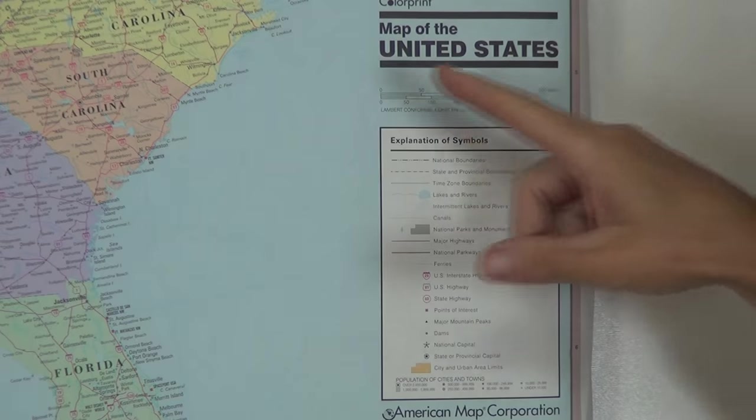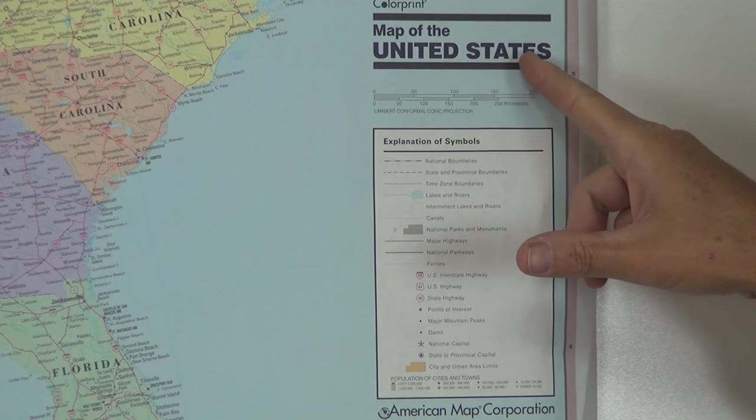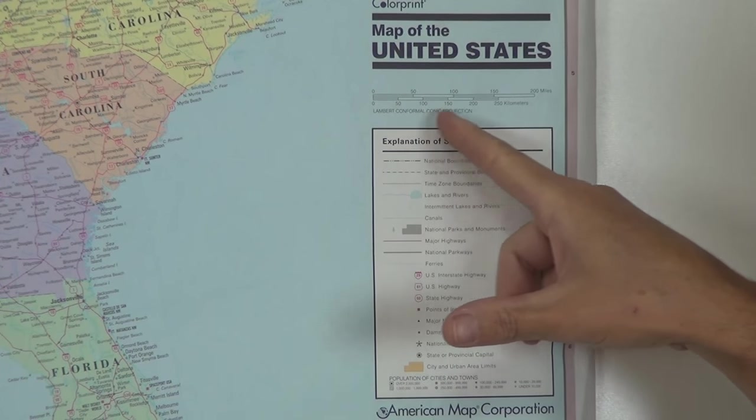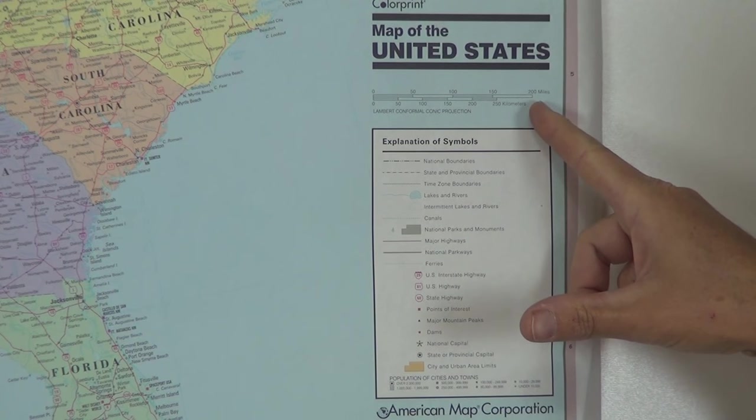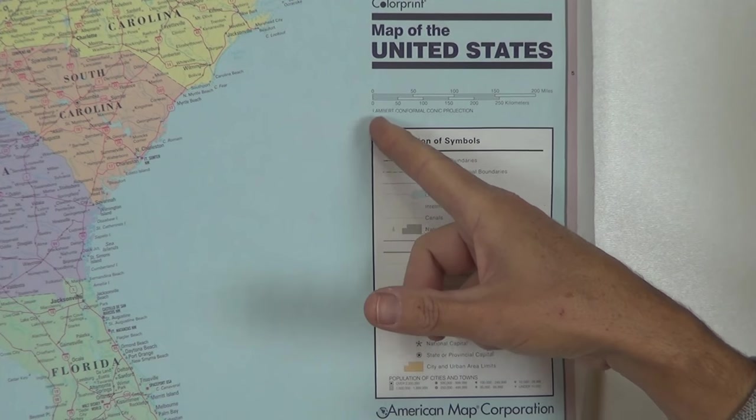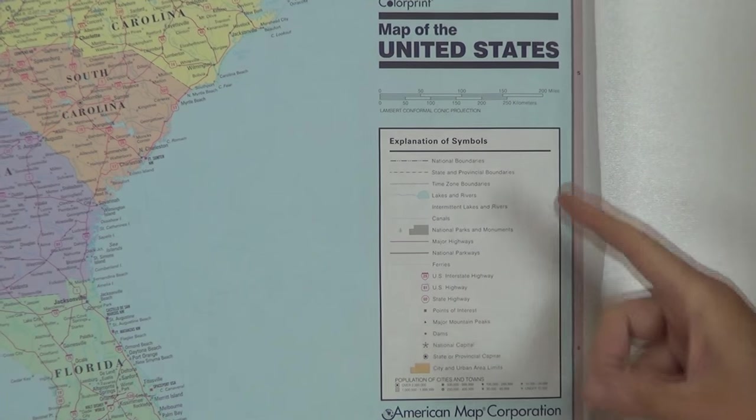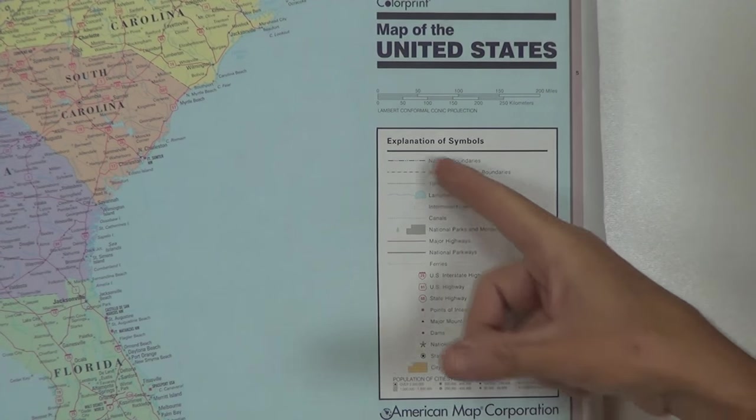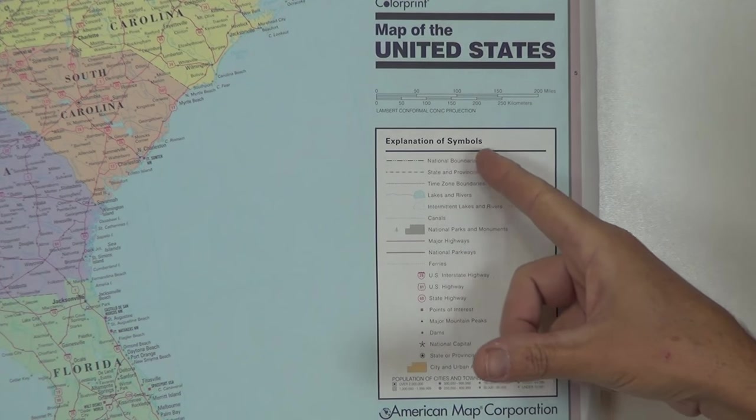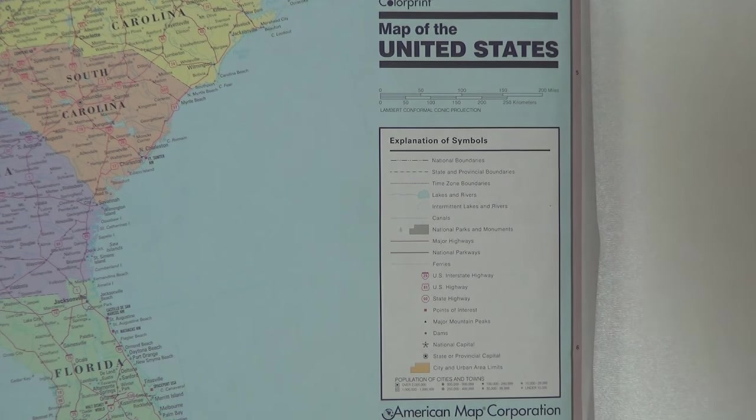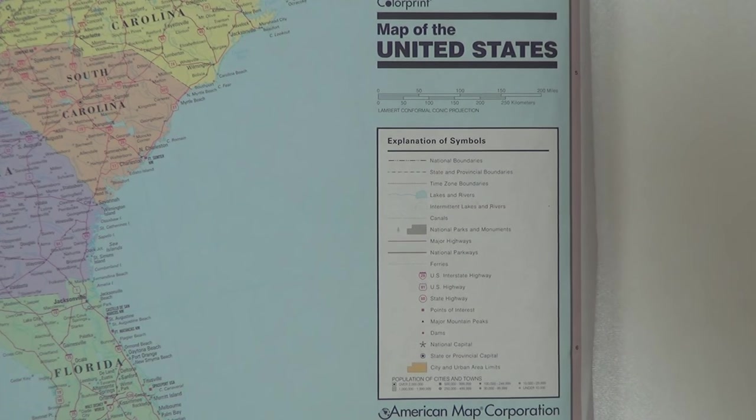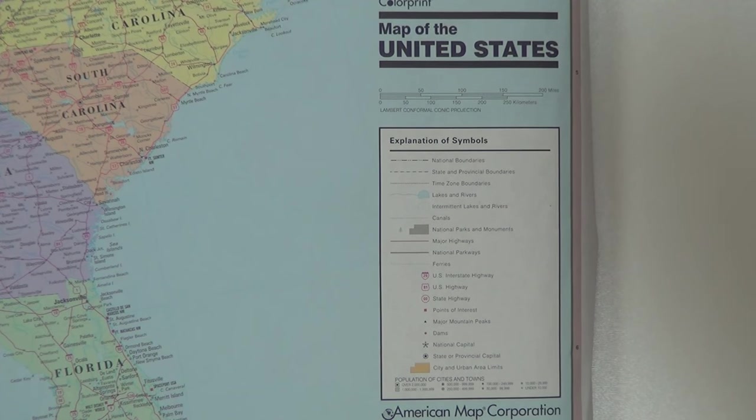Okay, so here you can see we have a title, Map of the United States. Here is a scale, and this is a graphic scale. Another thing a map has is a projection here. I'll go over that in just a second. The next thing it has is a key. You can see it says explanation of symbols. And then often it has some other information down in here, maybe a date. In fact, it says right here 2001.